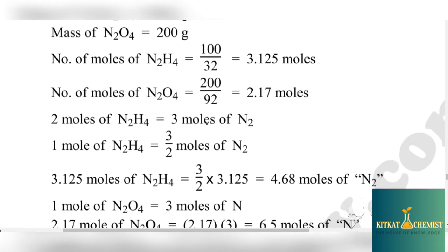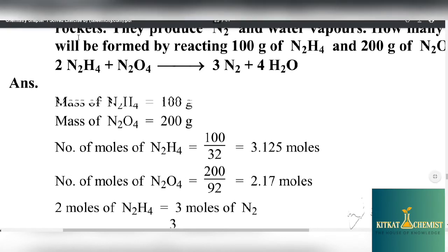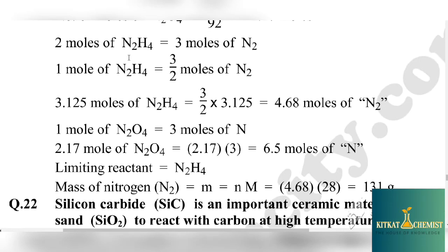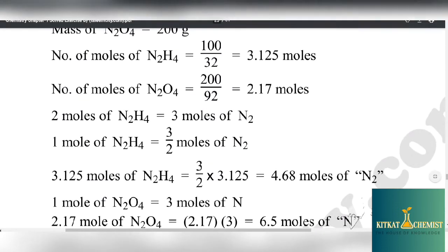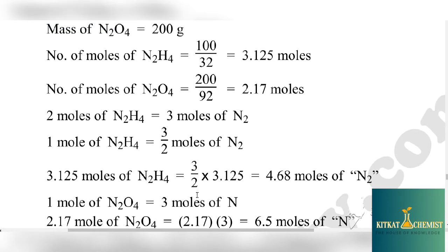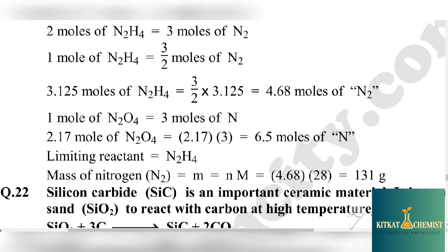Now for the comparison: We have already calculated the number of moles. 2 moles of N2H4 produces 3 moles of N2. We have to see from the balanced equation. If you have 2 moles of N2H4, then it produces 3 moles of nitrogen. If you have 1 mole, then it will be 3 by 2. If you have 3.125 moles of N2H4, then it produces 3 by 2 times 3.125, which equals 4.68 moles of N2.